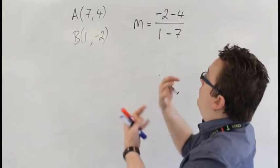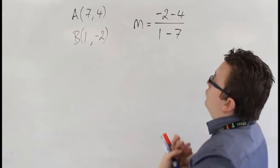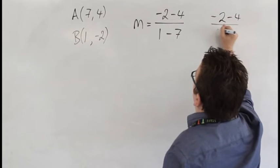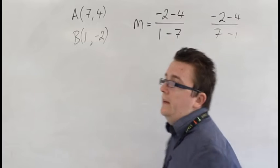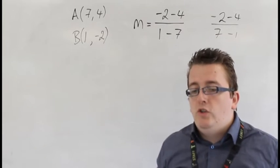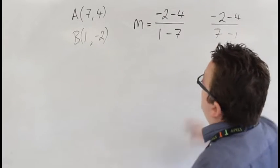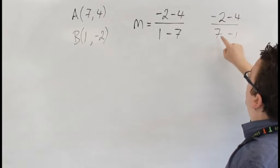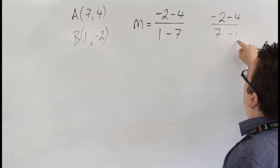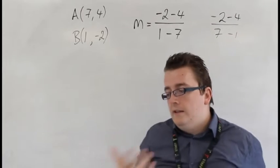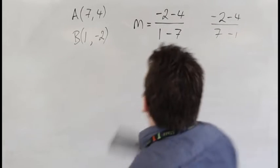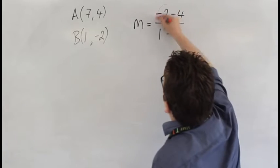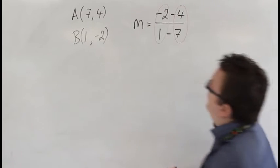Too many students make the mistake of just writing down, like, I'm going to have minus 2, take away 4, over 7, take away 1. This will change the outcome, and it's not the correct way to do it. So, that would be trying to find the equation of the line going through the coordinates 7, minus 2, and 1, 4. So, that's not what we want. So, don't get them mixed up. You need to be able to see them as coordinates vertically.